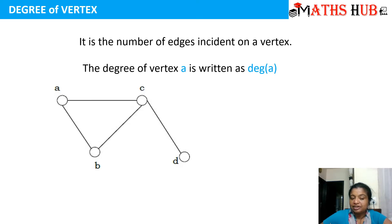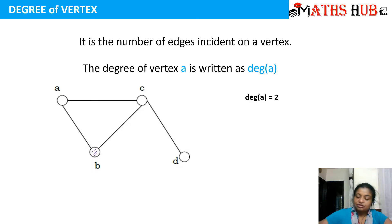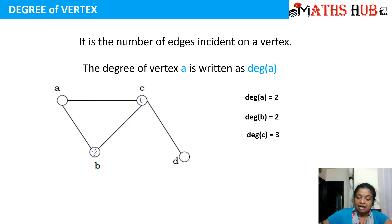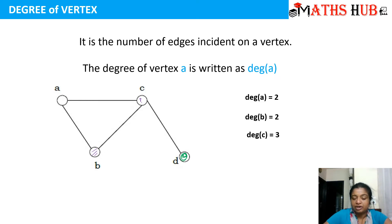So the degree of vertex A becomes two. Similarly for vertex B, two edges are getting incident on this vertex, so the degree of vertex B is also two. Now for vertex C, three edges are getting incident, so the degree of vertex C becomes three. For vertex D, only one edge is incident on it, so the degree of this vertex becomes one.